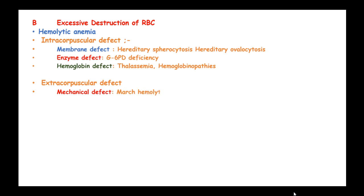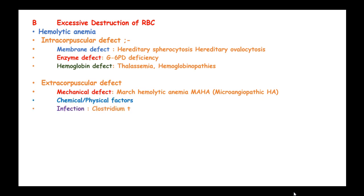Extracorpuscular defects causing excessive red blood cell destruction include mechanical defects like in microangiopathic hemolytic anemias, chemical or physical factors, infections like in Clostridium tetani, and antibodies like in systemic lupus erythematosus. Hypersplenism can also cause excessive hemolysis.